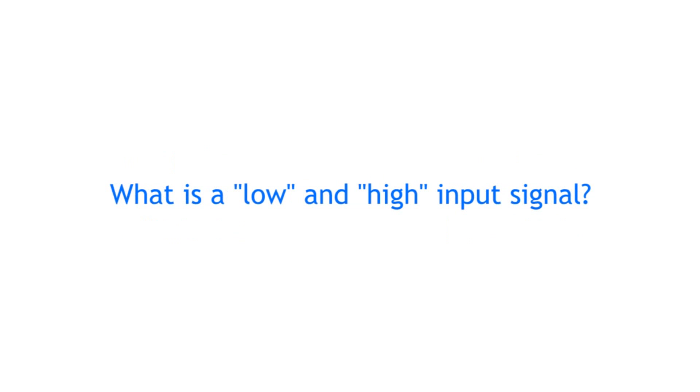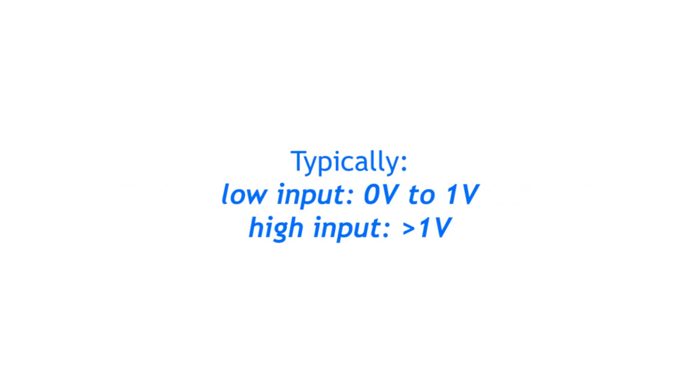What exactly specifies a low or high input signal is written in the manual of each module. Typically though, a low signal is between zero and one volt while a high signal is above one volt.